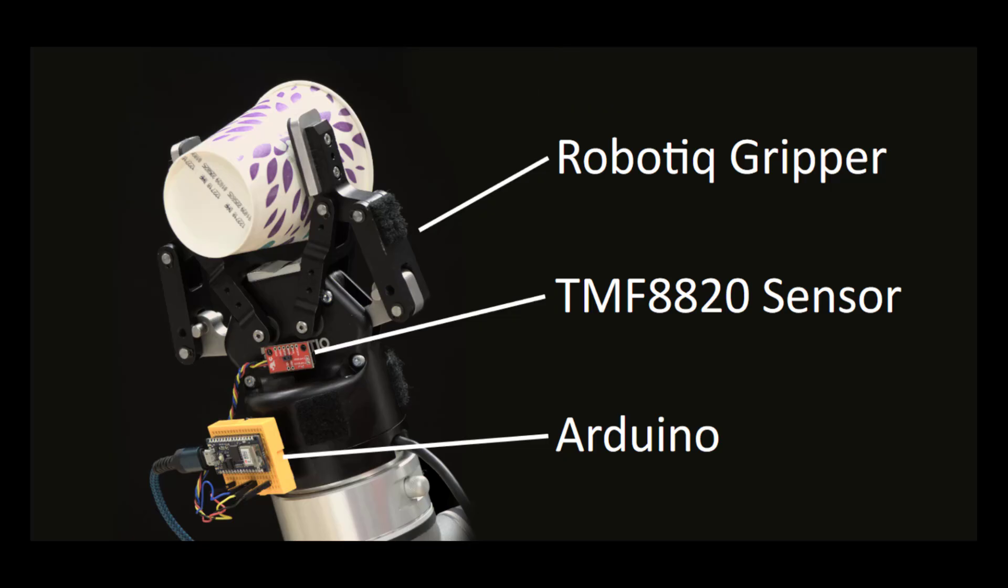As an example application for our methods, we create a demonstration in which a TMF 8820 sensor is mounted in a downwards facing position on the gripper or end effector of a robot arm. The sensor communicates with an Arduino microcontroller which forwards its measurements to a connected computer.